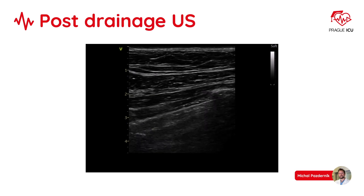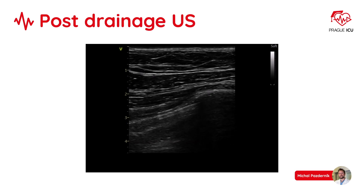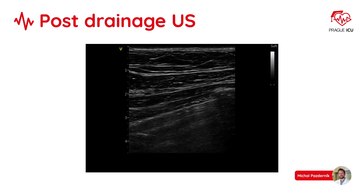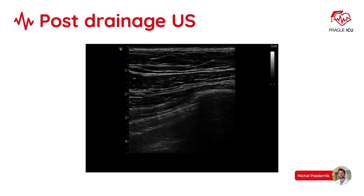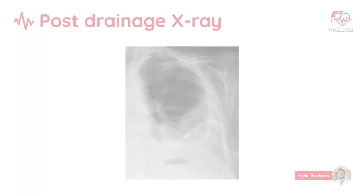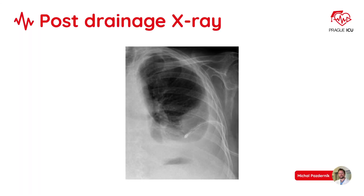Immediately after thoracosynthesis, exclude procedure-related pneumothorax. Finally, perform a chest x-ray to visualize the catheter position and also look for signs of potential pneumothorax.